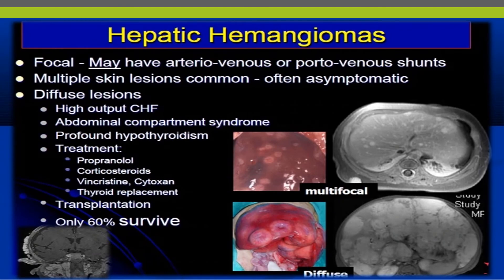Regarding hepatic hemangioma: focal lesions may have arteriovenous or portovenous shunts. Multiple skin lesions are common and often asymptomatic. Diffuse lesions may cause high-output heart failure, abdominal compartment syndrome, or profound hypothyroidism. Treatment includes propranolol, corticosteroids, vincristine, and thyroid replacement based on severity and involved organ. In certain cases, transplantation might be needed.